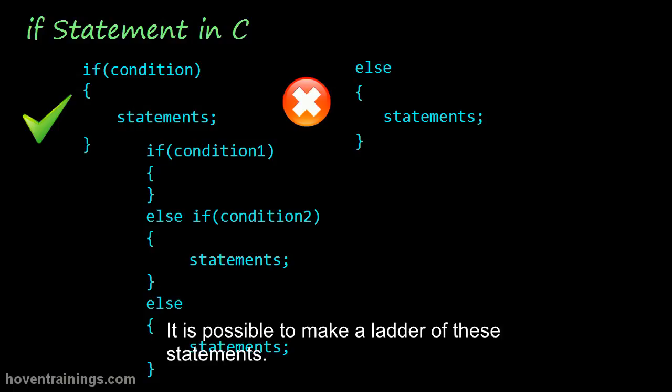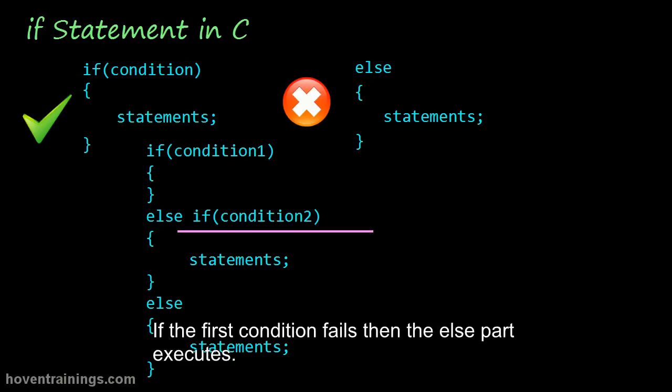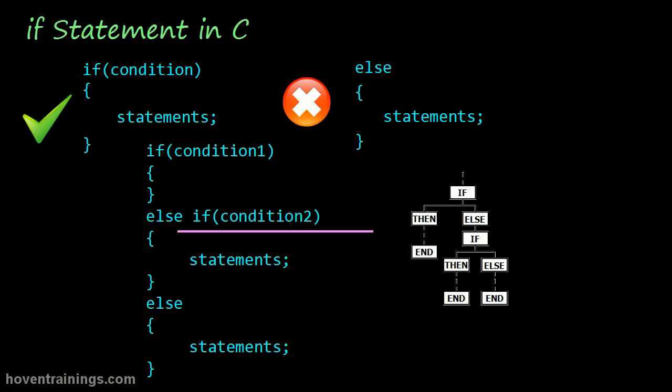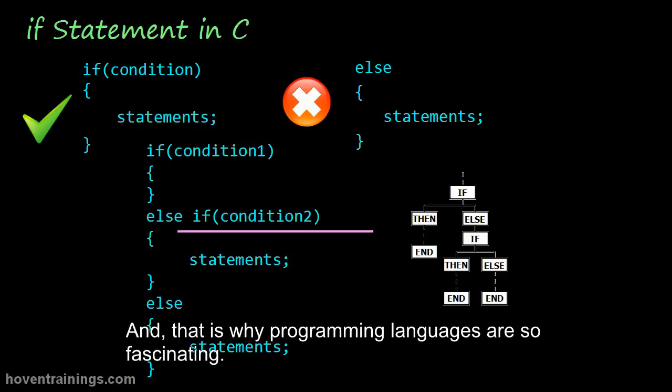It is possible to make a ladder of these statements. If the first condition fails then the else part executes. And here, another condition is tested to decide the flow. This chart can help you understand the nesting. It shows that it is possible to test more and more conditions. And that is why programming languages are so fascinating.